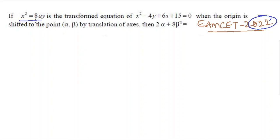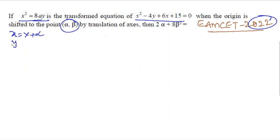Next problem: X² = 8aY is the transformed equation of x² − 4y + 6x + 15 = 0. When the origin is shifted to point (α, β) by translation of axes, find 2α + 8β².